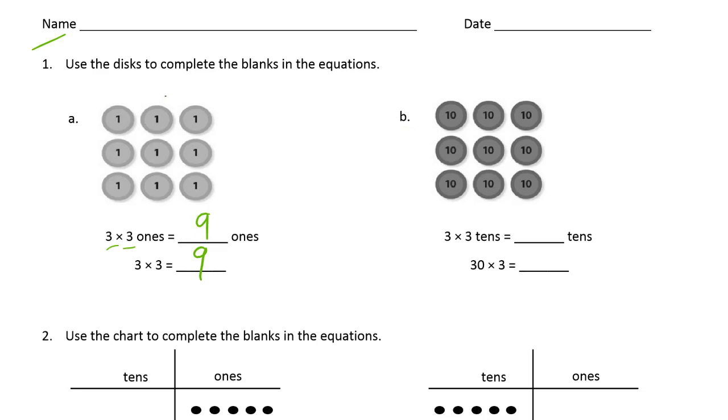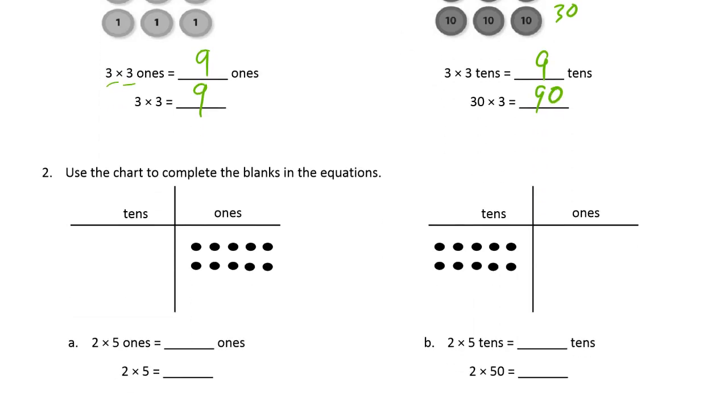And now we have tens, the same exact array but it's labeled with tens now. So three times three tens is nine tens, but thirty times three, that's each row is thirty. That's how you get three thirties. That's ninety. And that's just thinking of counting tens instead of just changing the unit.